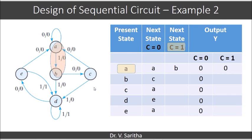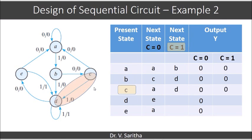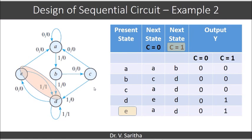Then: A on 1 is B, output is 0. B on 1 is D, output is 0. C on 1 is D, output is 0. D on 1 is D itself, output is 1. E on 1 is D, output is 1.